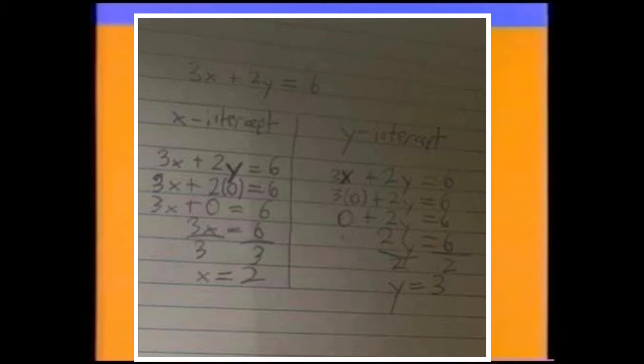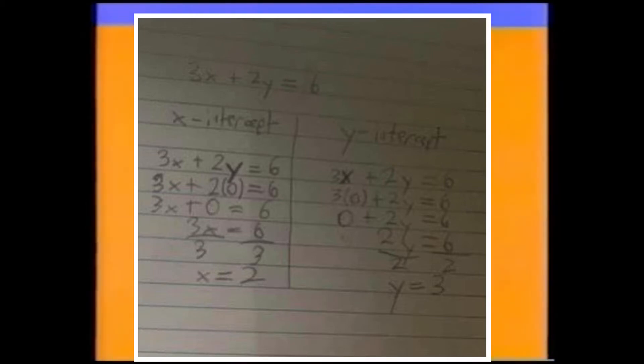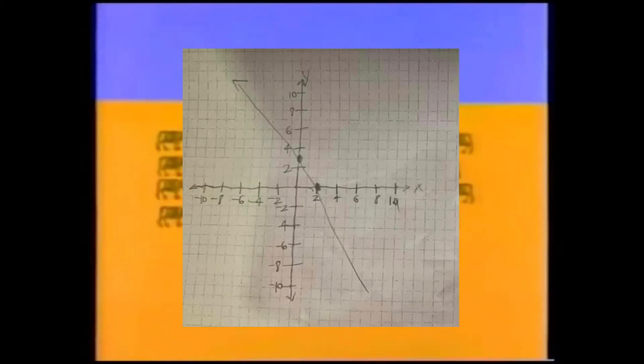Here comes a problem. 3x plus 2y equals 6. Solve the x-intercept and the y-intercept. Replace y with 0 for the x-intercept and x with 0 for the y-intercept. X equals 2, y equals 3. Now I'm going to graph it. The line is straight. The x and y-intercepts are done. Congrats to me.